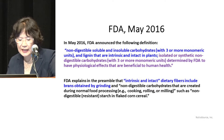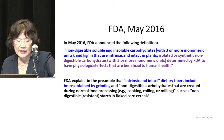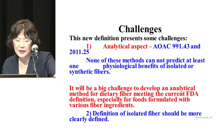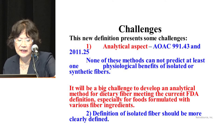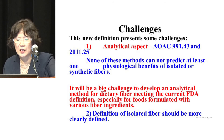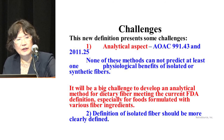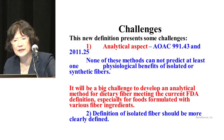FDA further explained that intrinsic and intact dietary fiber includes brans obtained by grinding, etc. This new definition presents analytical challenges. As of now, Codex Alimentarius Commission recommends AOAC 991.43 for conventional fiber analysis and 2011.25 for dietary fiber including non-digestible oligosaccharides. None of these methods can predict at least one physiological benefit of isolated or synthetic fiber. If we know the composition, we can calculate dietary fiber content. However, in many cases we are dealing with food containing a mixture of dietary fiber, sometimes with unknown ingredients, and there is no way to predict physiological benefit or whether something truly meets the dietary fiber definition.